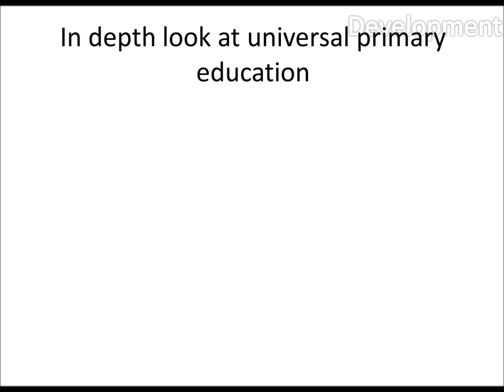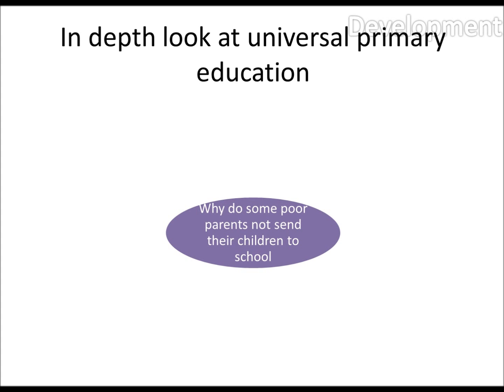So now for a look into primary education — just taking one of the goals out and really having a look at why this was chosen. Why do some poor parents in poor countries, as in really poor, not send their children to school? This would be in countries where it's not compulsory to send children to school.